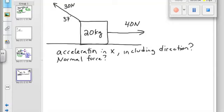Acceleration in the x including directions. So obviously we're going to be using the x directions here. We'll first need to find the component of that which is in the x direction. That is going to be 30 cosine 37 degrees, which is what? 24. 24 newtons.